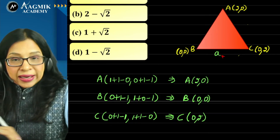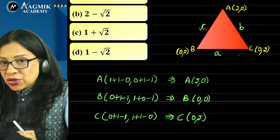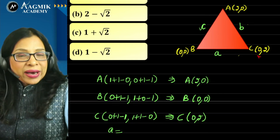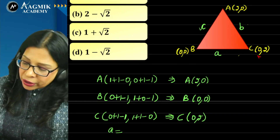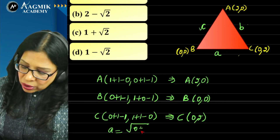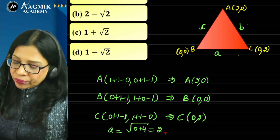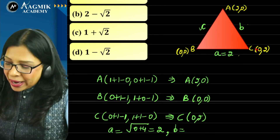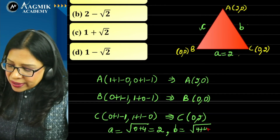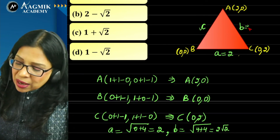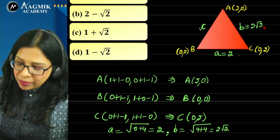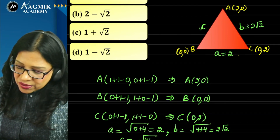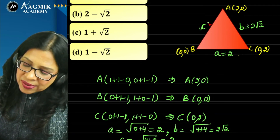Now find side lengths for the incenter formula. Small a = BC = √(0² + 4) = 2. Small b = AC = √(4 + 4) = 2√2. Small c = AB = √(4 + 0) = 2. These lengths are needed to compute the incenter coordinates using the weighted formula.